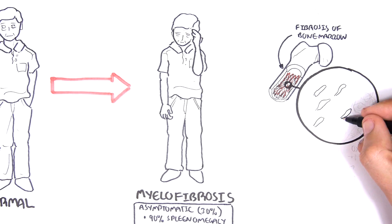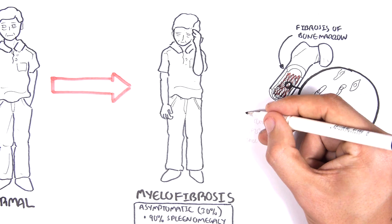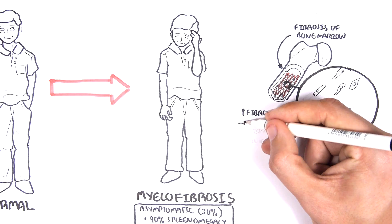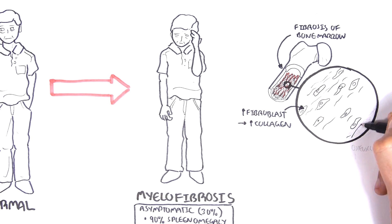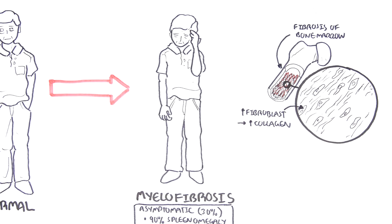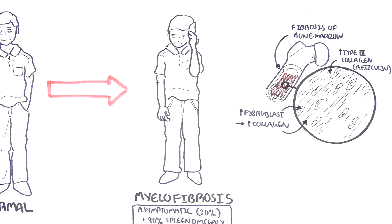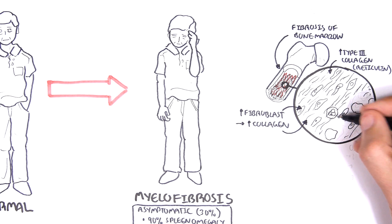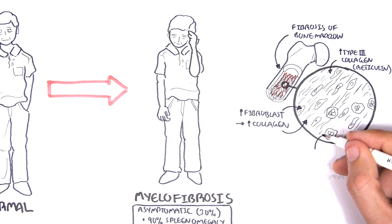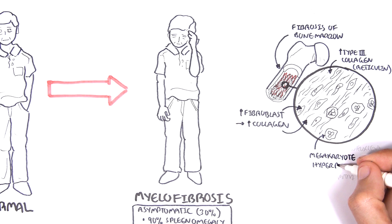Within the fibrotic bone marrow, there is an increase in fibroblasts, which means that there is an increase in collagen formation and deposition, and also type 3 collagen, also known as reticulin. The proliferation of fibroblasts and the deposition of collagen is actually a result of hyperplasia of megakaryocytes in the area.